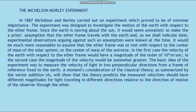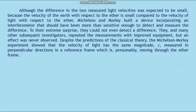In the second case, the magnitude of the velocity would be somewhat greater. The basic idea of the experiment was to measure the velocity of light in two perpendicular directions from a frame of reference fixed to the Earth. A moment's consideration of the classical theory as summarized by the vector addition formula number 4 shows that the theory predicts the measured velocities should have different magnitudes for light traveling in different directions relative to the direction of motion of the observer through the ether. Also, the difference in the two measured light velocities was expected to be small because the velocity of the Earth with respect to the ether is small compared to the velocity of light with respect to the ether. Michelson and Morley built a device incorporating an interferometer which should have been more than sensitive enough to detect and measure the difference.